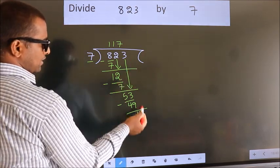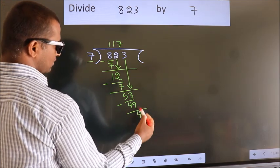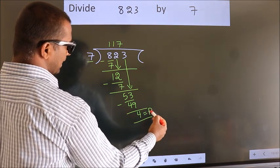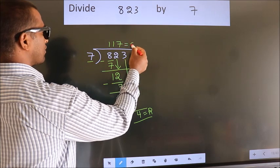No more numbers to bring down. So we stop here. This is our remainder. This is our quotient.